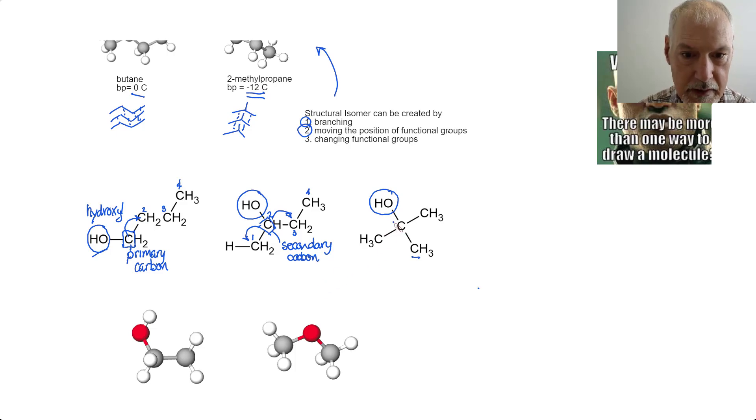And this gives rise to a secondary alcohol. Lastly, this one, that carbon which is attached to the functional group is attached to three other carbons, and gives rise to what we call a tertiary carbon. And this would be called a tertiary alcohol.